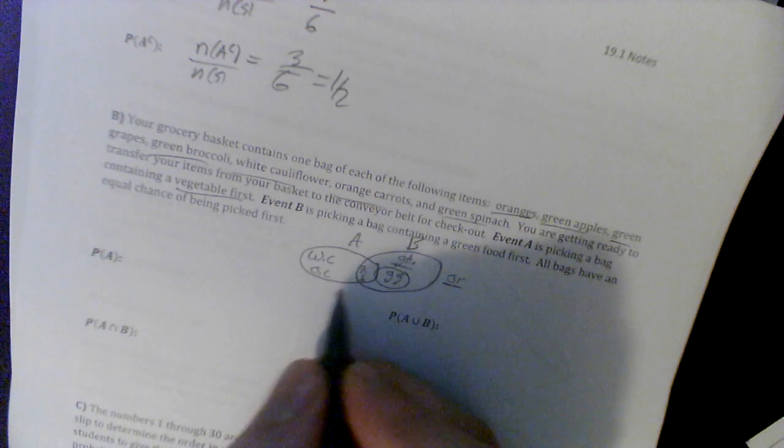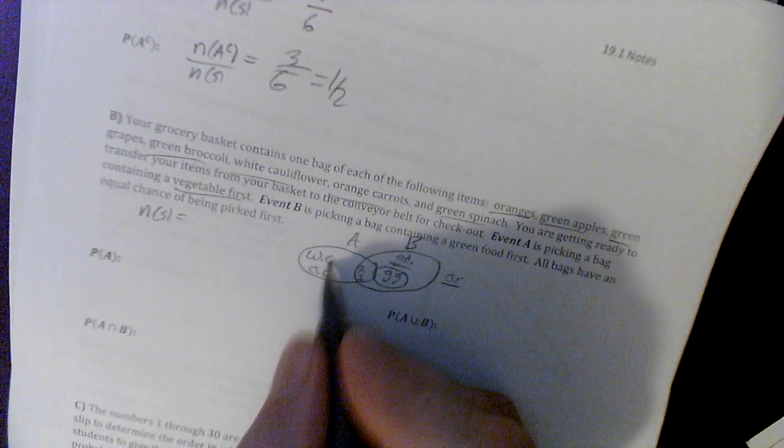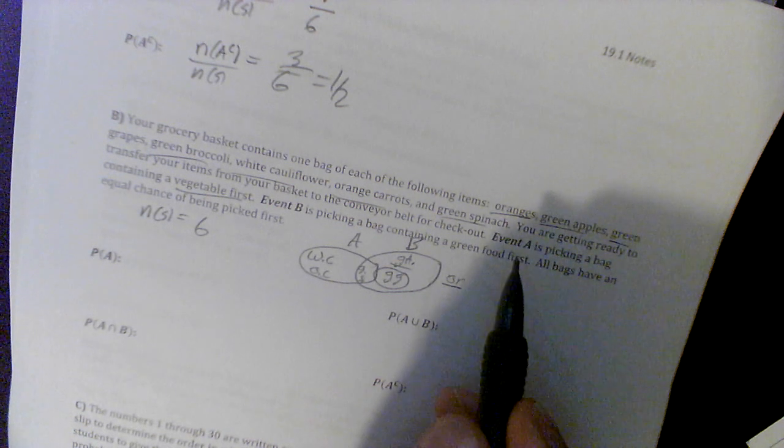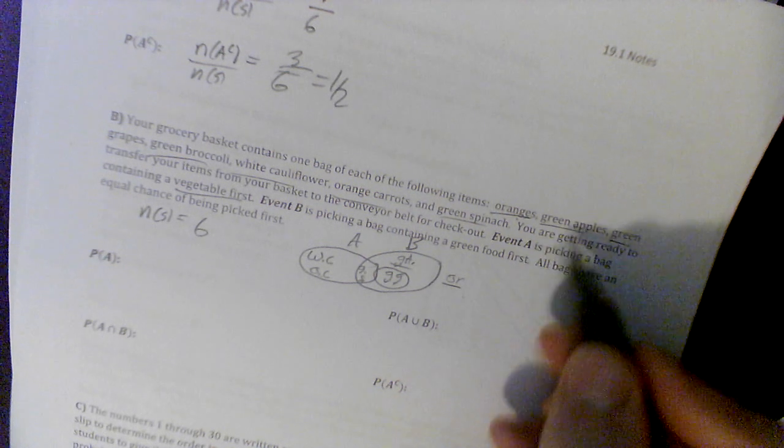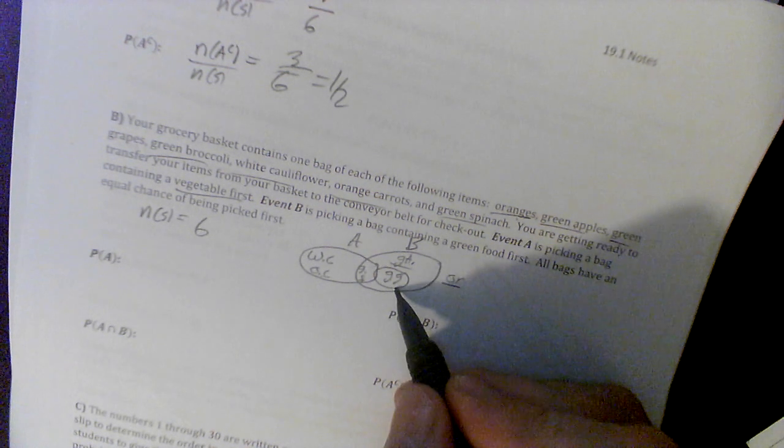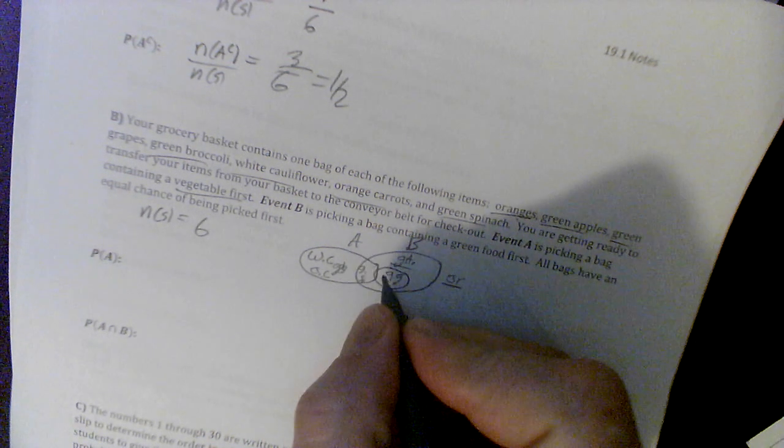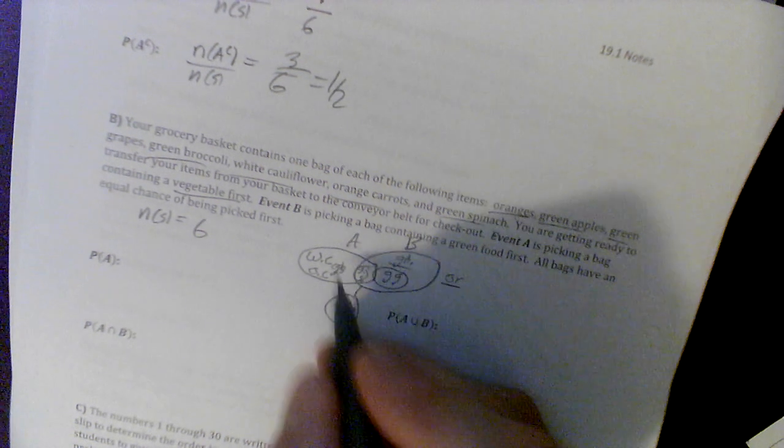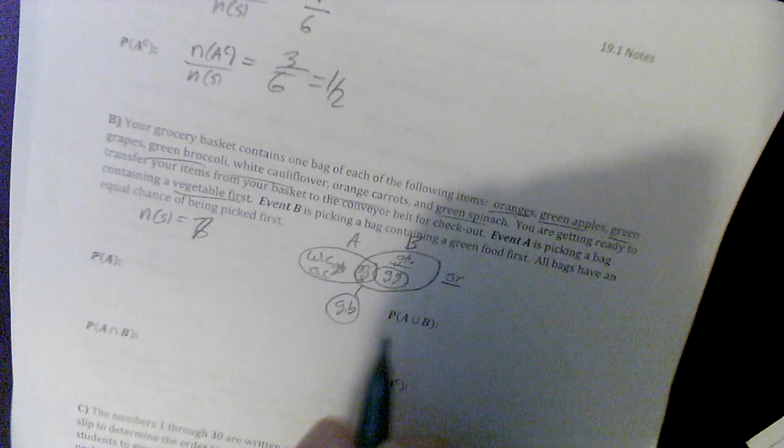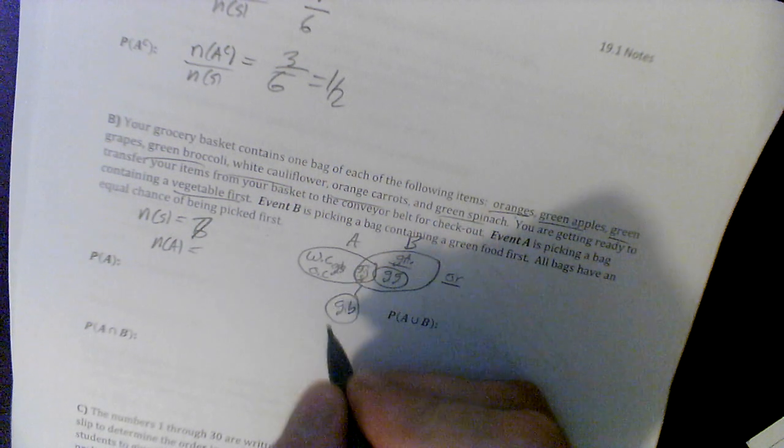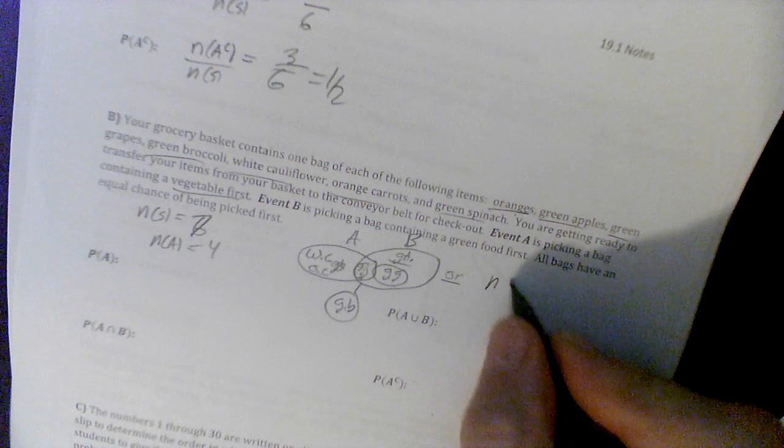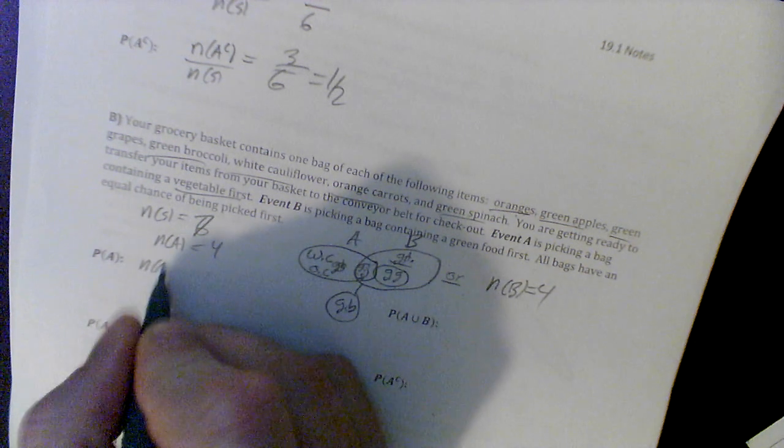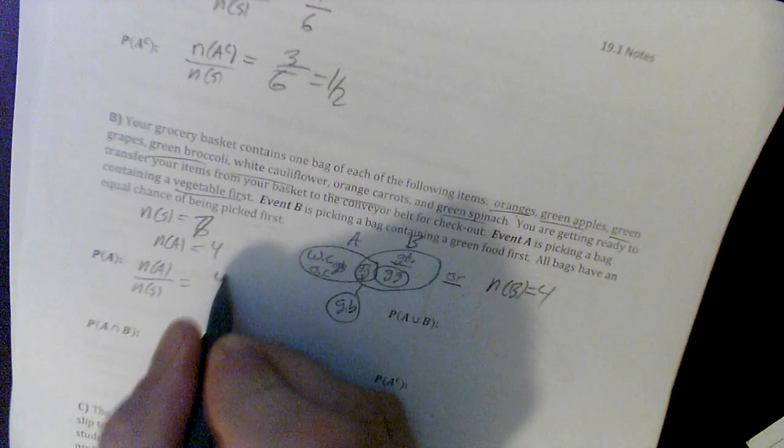It looks like the probability of A... Let's do the number of our sample set. The number of our sample set looks to be 1, 2, 3, 4, 5, 6. Wait, I must have missed something. Green broccoli is what I forgot, which is both in here. So, the sample space is 7. The number in A is 1, 2, looks like 4. The number in B is 1, 2, 3, 4 as well. Probability of A is the number in A over the number in the sample space. A had 4, the sample space was 7.